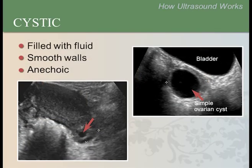A cystic structure is filled with fluid and its walls are generally smooth. Because a cyst is fluid, it will be anechoic. These are both images of ovarian cysts.